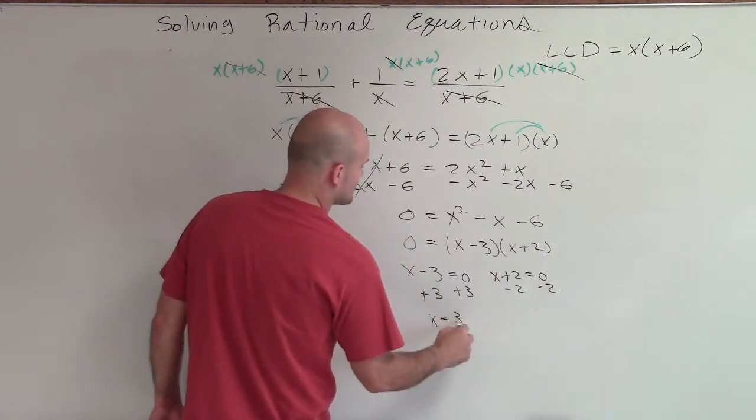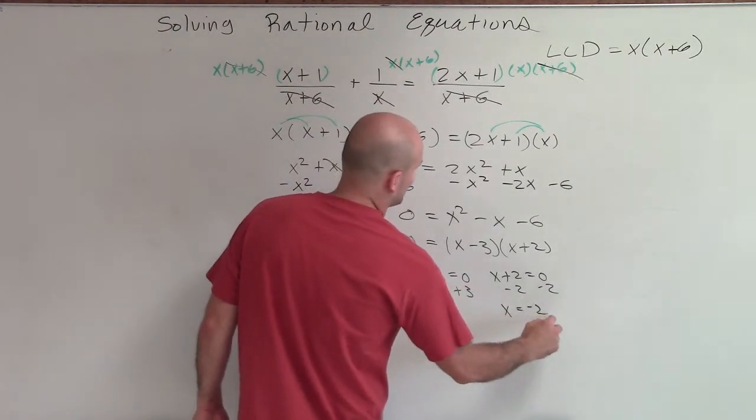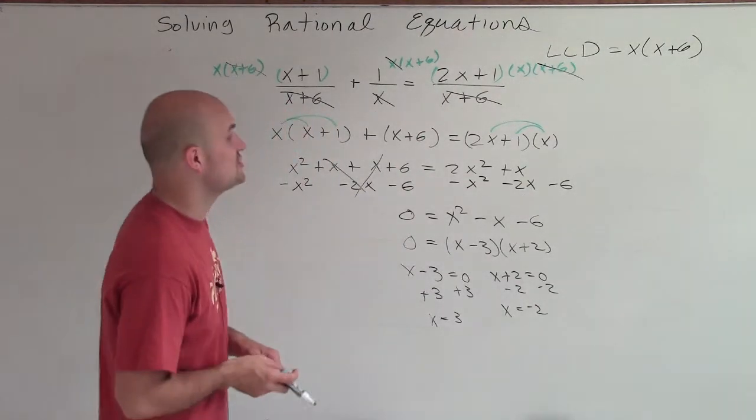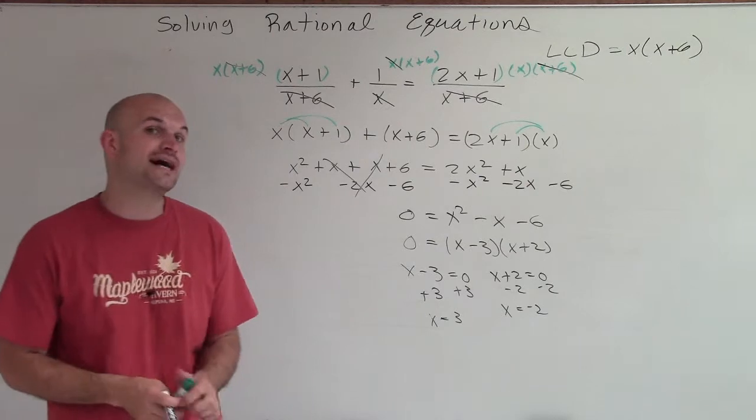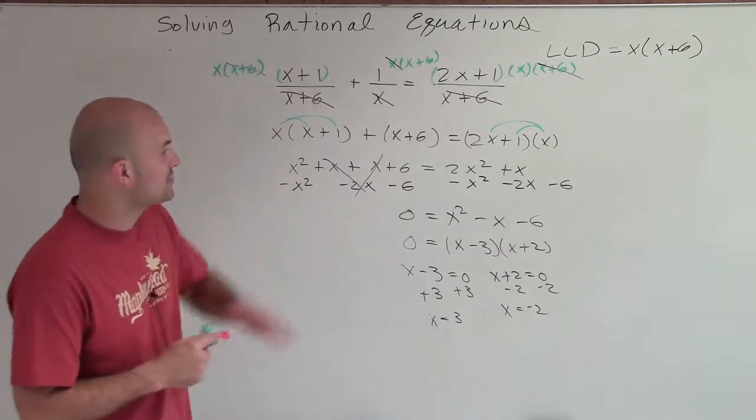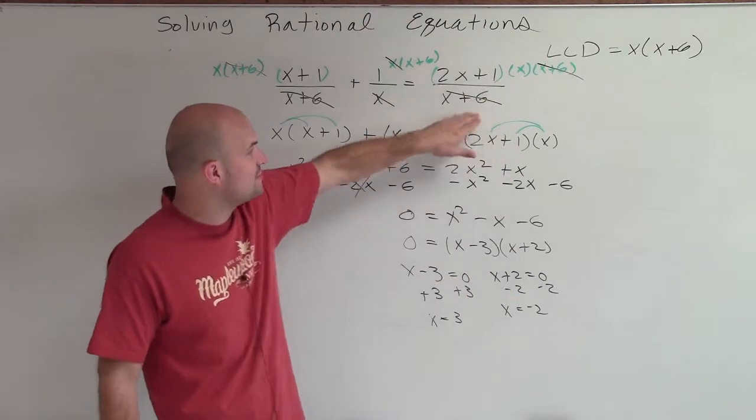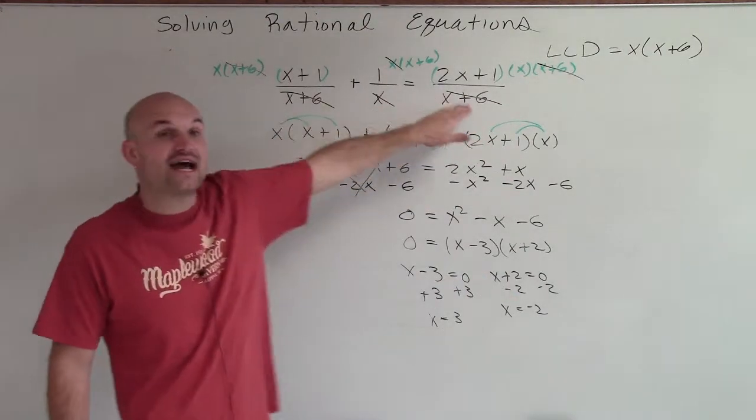But before I go ahead and say I'm done, let's go back and check these two solutions and make sure they're not extraneous, meaning that they're both going to satisfy our equations. Because if x equals 3 or if x equals negative 2, are either one of my denominators ever going to equal 0?